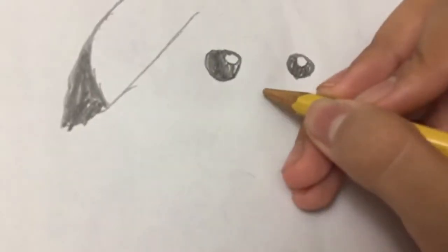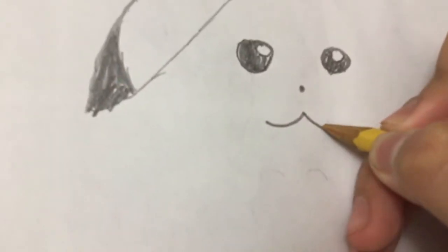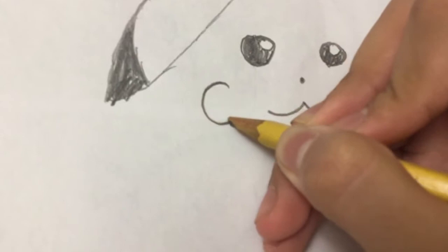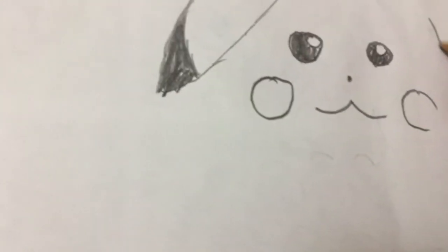His nose is like just a dot. That's what I like to do. And then his, this is his face, and his cheek. These are colored in red, if you want to color it.